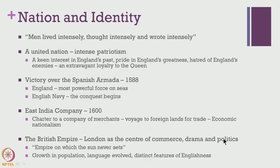With this we almost come to an end of this session. We have seen how Britain began to consolidate itself with London as the centre of commerce, drama and politics. Britain quite easily became the empire on which the sun never sets, replacing all other European competitors and becoming the world leader. There was growth in population, the language began to evolve, and Britain came a long way from the Middle Ages. Distinct features of Englishness also began to emerge. In the next session we will take a detailed look at how the stage was getting set for drama and other kinds of fine arts to emerge. Thank you for listening and see you in the next class.